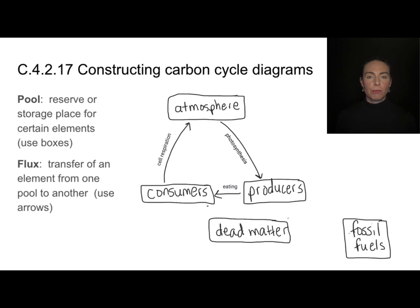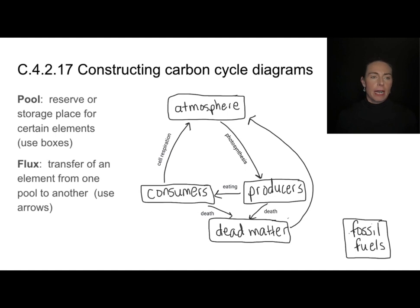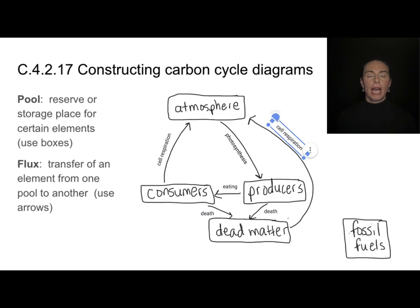Consumers and producers both die — they both become dead matter. So death results in these producers and consumers turning into dead matter. Two things can happen to it depending on the conditions. One is that decomposers can use it and this dead matter can decay — they can do decomposition. That's just a fancy form of cell respiration, so decomposers doing cell respiration will again add carbon dioxide back into the atmosphere.